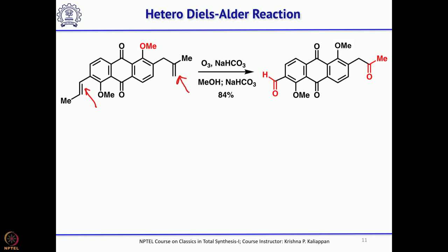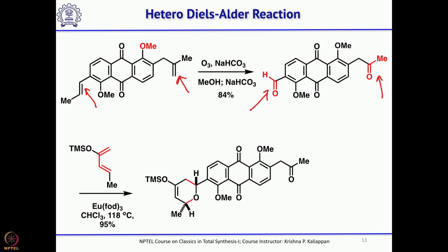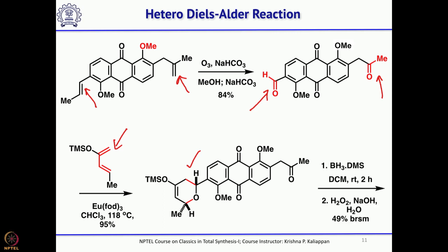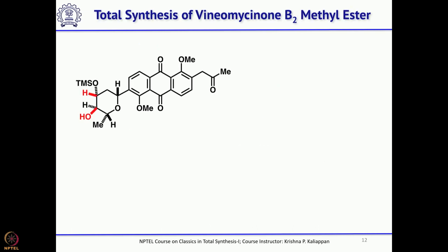What needs to be done is to carry out a hetero Diels-Alder reaction on the aldehyde on the left-hand side, and then add the CH2CO2Me through a Reformatsky type reaction. He carried out the hetero Diels-Alder reaction with this diene, and the Diels-Alder reaction with this diene gave this dihydrofuran, which upon hydroboration followed by oxidation with hydrogen peroxide and sodium hydroxide gave the required diol.